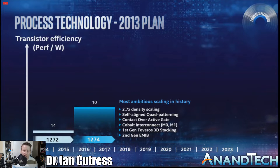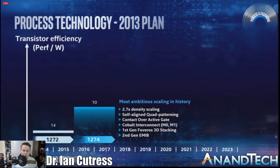But ultimately, from 2013, looking forward, this was Intel's next four years. They were moving from 14nm to 10nm with increasing density scaling, features like self-aligned quad patterning, contact over active gate, cobalt interconnect, and looking into Foveros and eBIB and all the things we've learned to expect from Intel.